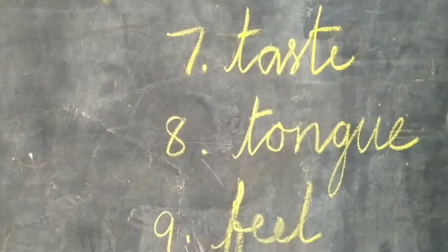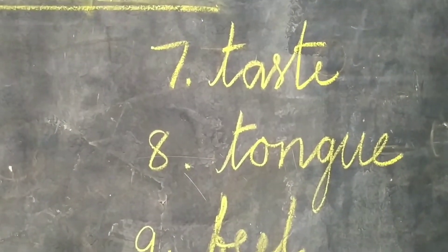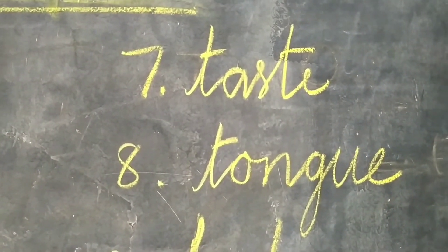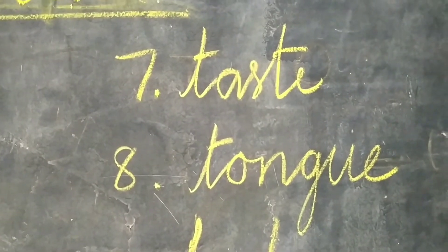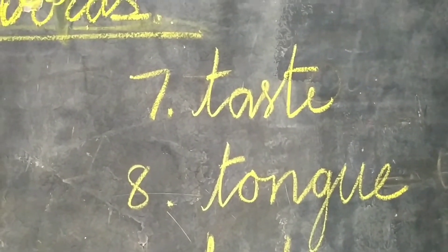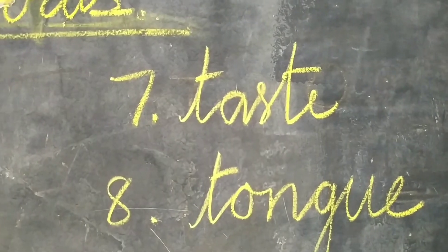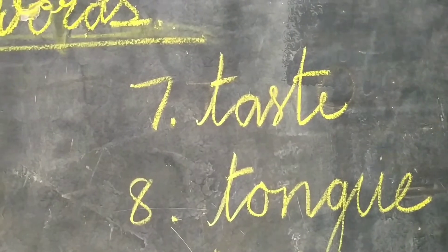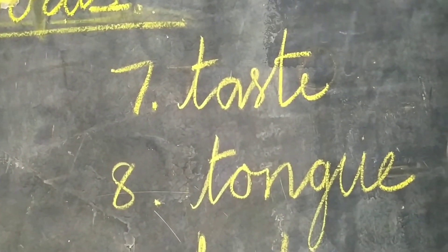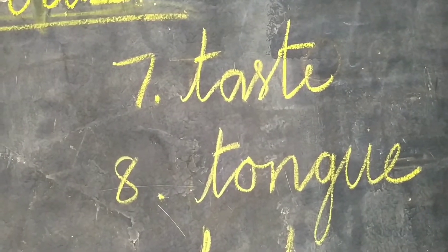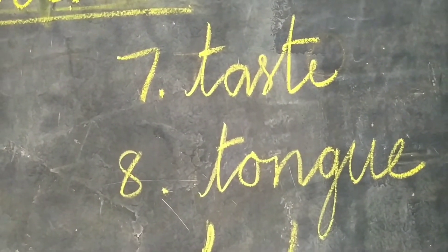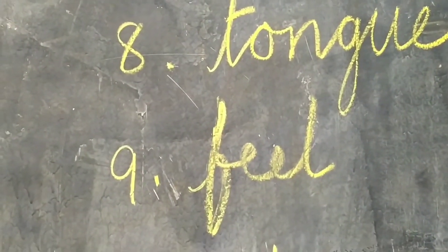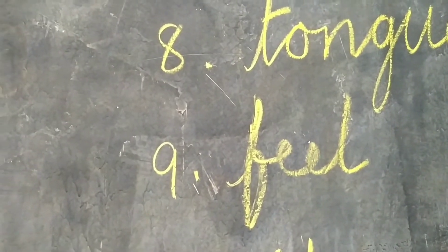In your notebook, children, make two parts and write. Draw a line in between and you can write the seventh word beside. In one page only. Seventh one: T-A-S-T-E. Taste.